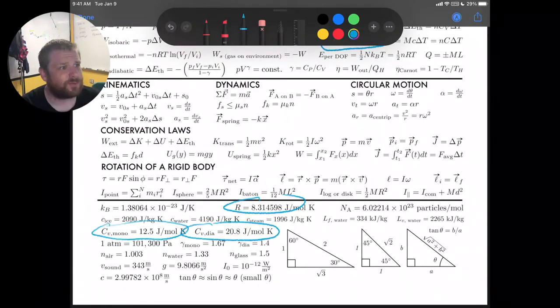And we're also given CV for a monatomic gas and CV for a diatomic gas. So between those sets of constants, you can get all four. CP monatomic, CV monatomic, CP diatomic, and CV diatomic. And then it's just a matter of calculating the change in the thermal energy, or Q.